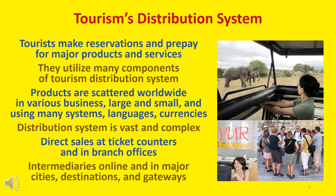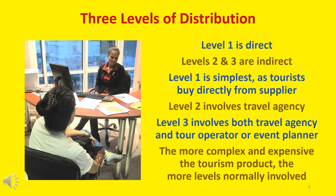Components range from direct sales at ticket counters and branch offices to intermediaries and middlemen located online or in major cities, destinations, and gateways. Tourism's distribution channel has three levels. The simplest is level one distribution, at which the tourist buys the tourism product directly from the supplier — for example, buying a hotel room at the hotel's front desk. Levels two and three are indirect channels. Level two distribution involves going through a travel agency, whether online or in an office — for example, buying an airline ticket from a travel agent. Level three distribution involves a travel agency again, but adds the services of a tour operator or event planner — for example, buying a tour operator's safari package at a travel agency.